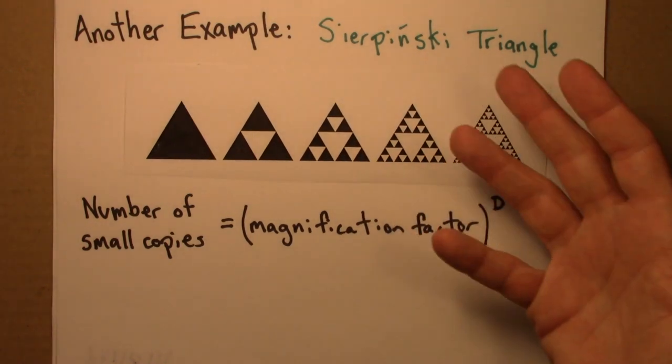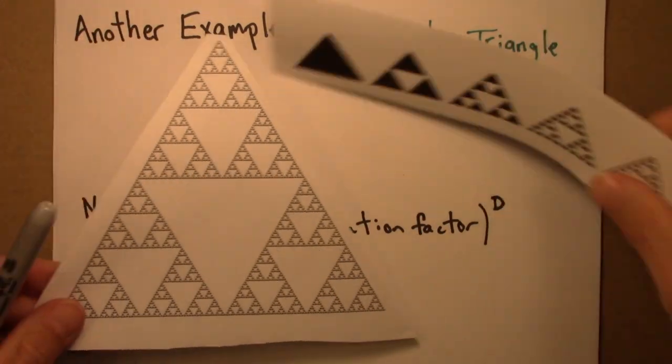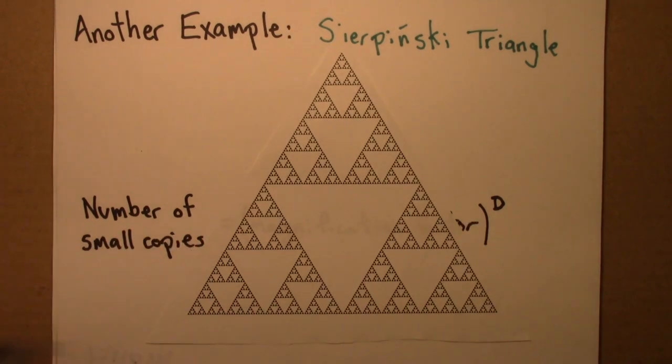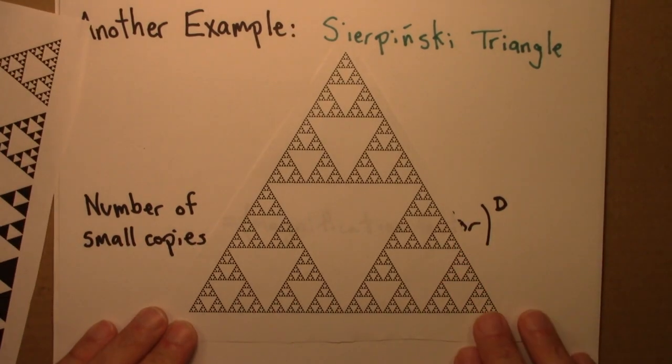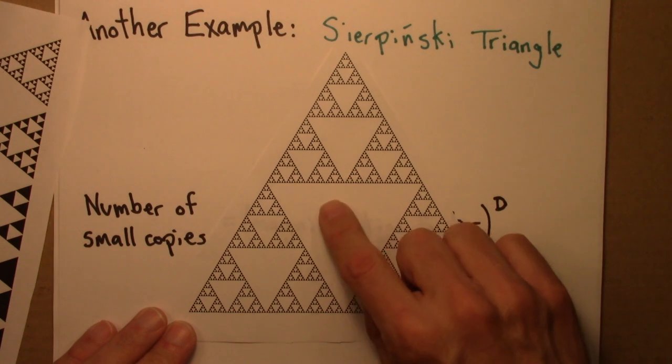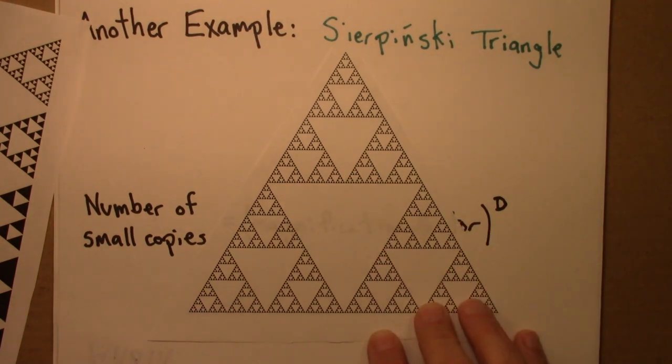And as this repeats, one gets a fractal shape. So here is this carried out a few generations farther. And it's a fractal because we see these triangles within triangles within triangles repeating at many different scales. It's self-similar.